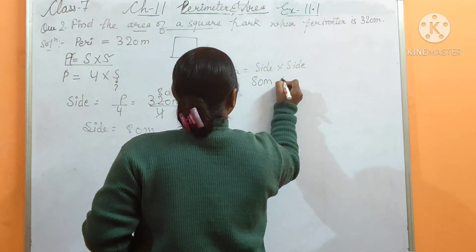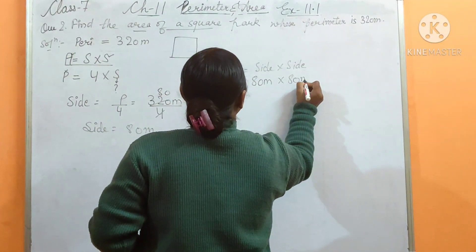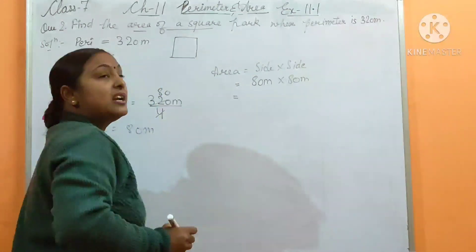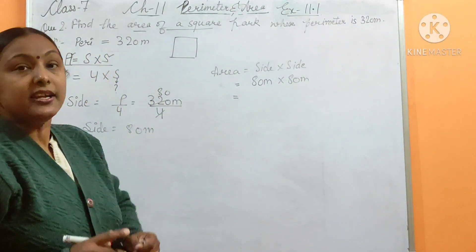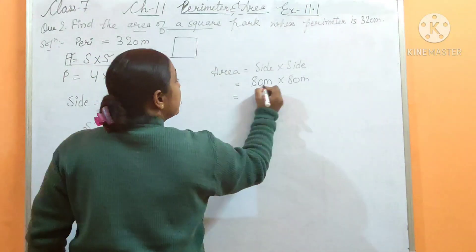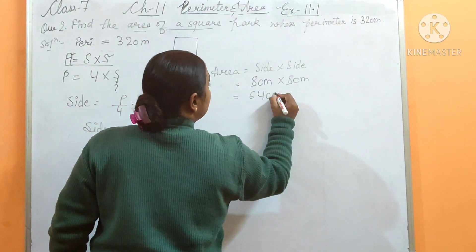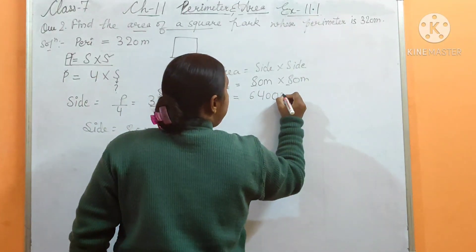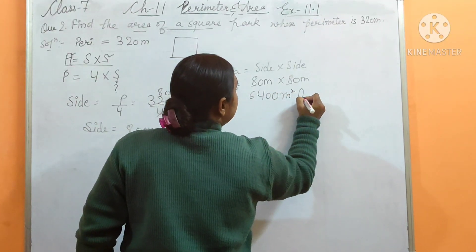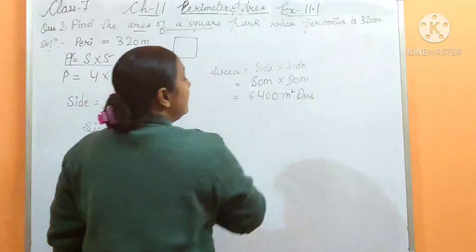Now area of square equals side into side, which is 80 into 80. That gives us 6400 meter square. This is the answer of the second question.